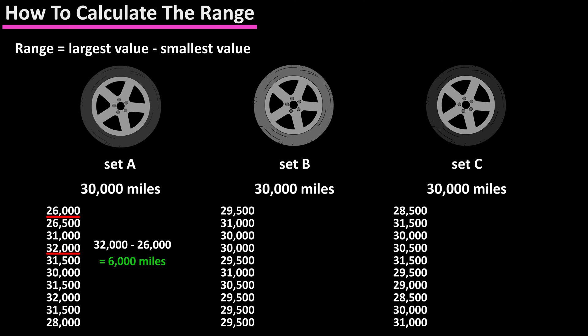Set A had a range of 6,000 miles. Set B had a range of 1,500 miles and set C had a range of 3,000 miles.